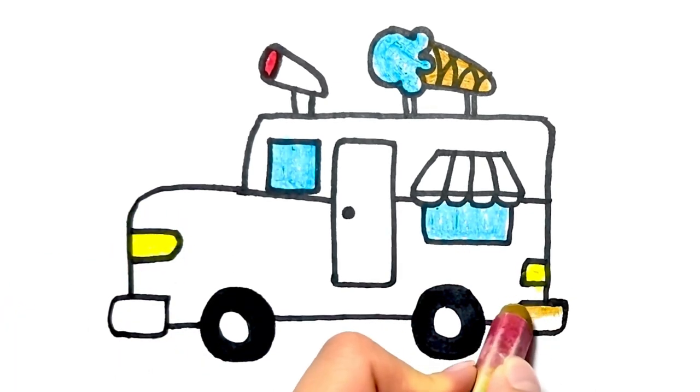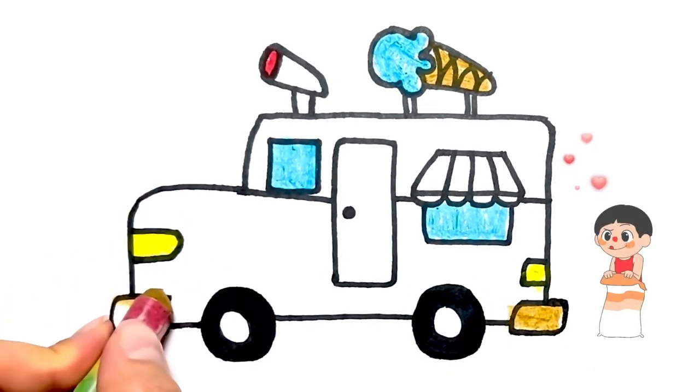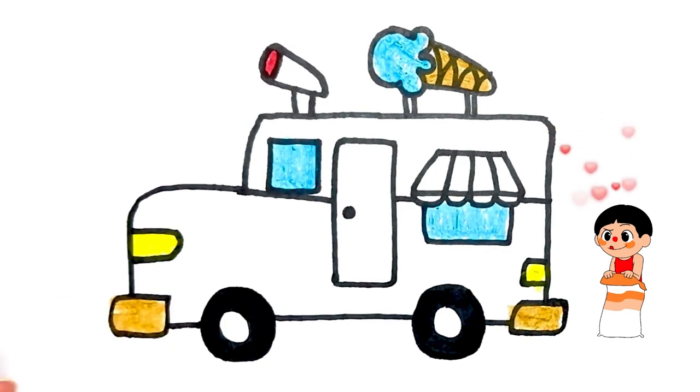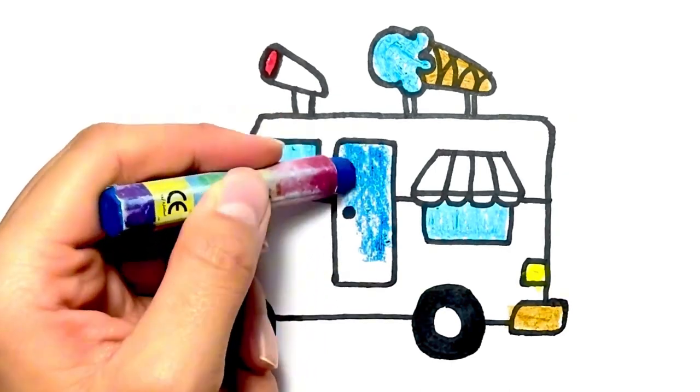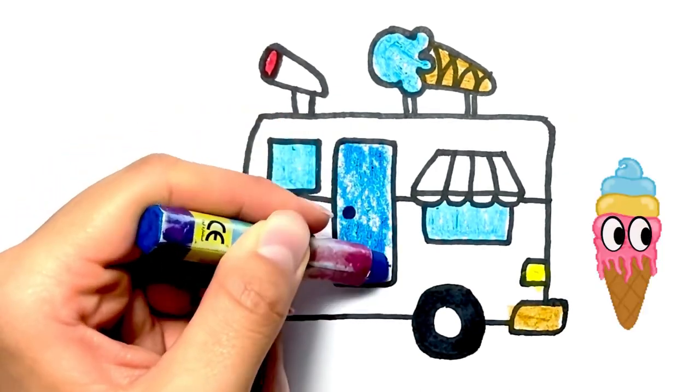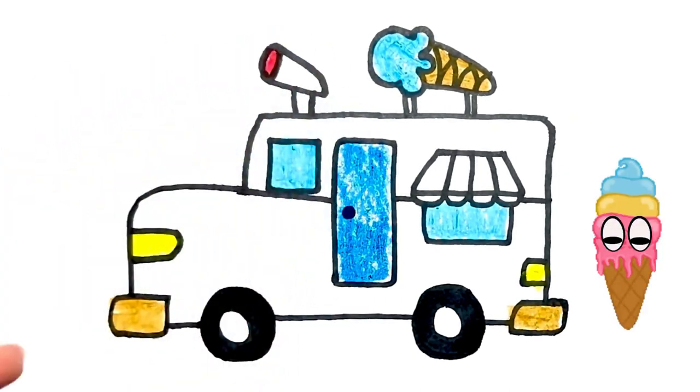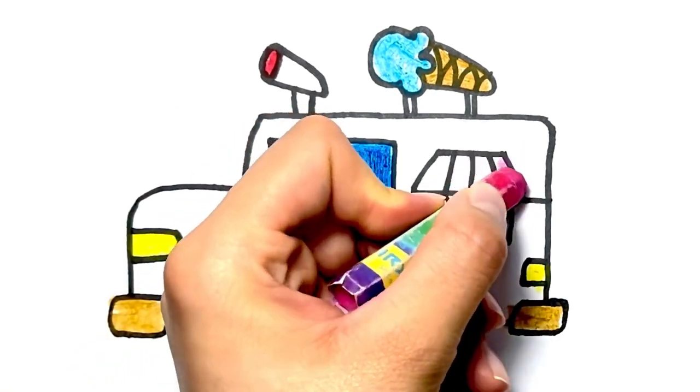Brown color. Kids are waiting for ice cream van to be completed. Blue color for the door. Pink color for shelter.